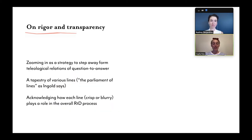We chose to zoom in as a strategy to step away from the teleological relationships of question to answer or action to outcome, which require a straightening of these lines. Through this close reading of the process, we found a more honest and messy way of reporting on the rigor of our work by understanding it as a tapestry or parliament of lines. Reporting on RTD processes and findings inevitably means choosing what to share and what will remain a private part of the process. But instead of agonizing over what isn't told, it might be more relevant to acknowledge how each line, as crisp or as blurry as it is, might play a role in the overall process.